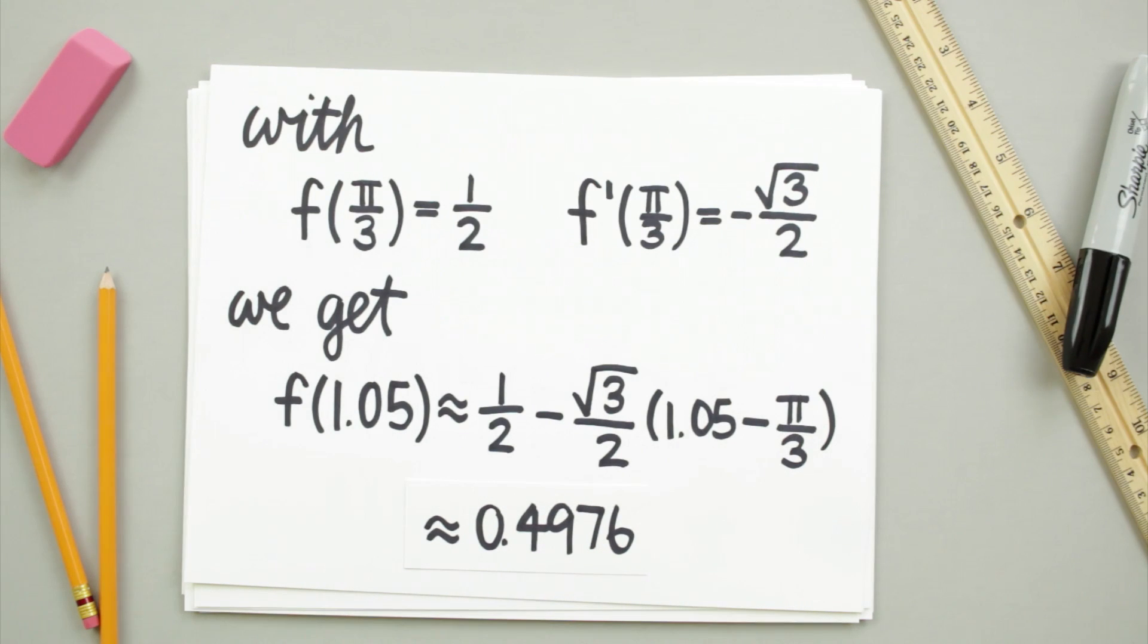This estimate seems to make sense since f of pi over 3 is equal to 1 half, and 1.05 is so close to pi over 3.